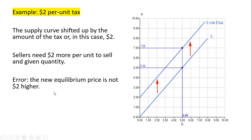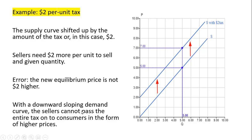One common error is that the new equilibrium price is not going to be $2 higher. People think if the equilibrium price was $5, it'll now be $7 — we'll show that is not correct. With a downward sloping demand curve, sellers cannot pass the entire tax on to consumers in the form of higher prices.